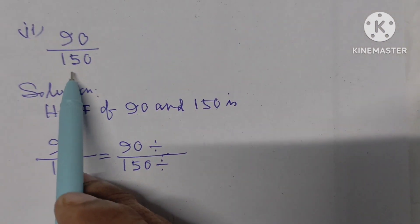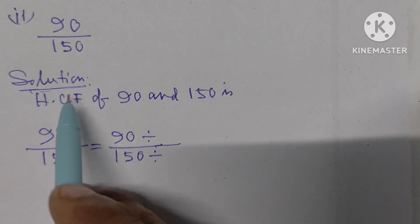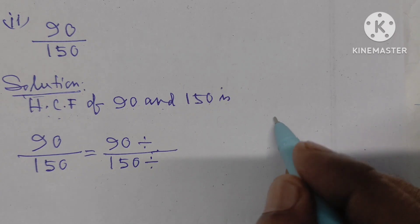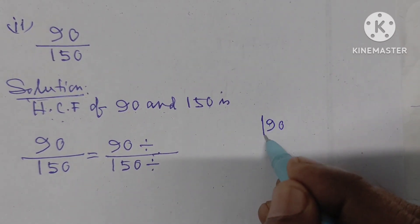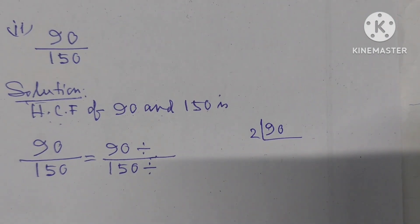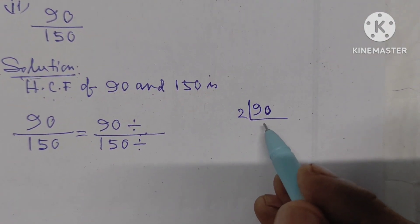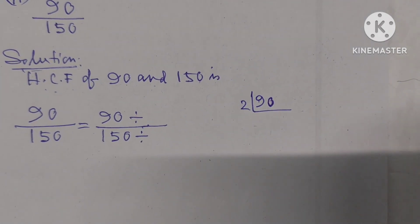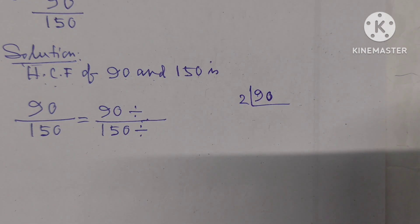Number 2: 90 by 150. At first we have to find the SCF of 90 and 150. For 90, the unit place is 0, so it is divisible by 2. We know that if the unit place of a number is 0, 2, 4, 6, or 8, then it is divisible by 2.